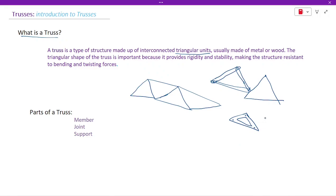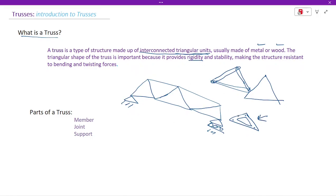This is the simplest form of truss. A truss can be constructed with metals or with wood. The triangular shape provides rigidity — it is very stable — so wherever you use trusses, you can make your structure resistant to bending and twisting.